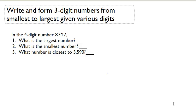Let's write and form three-digit numbers from smallest to largest, given various digits. So they give us a four-digit number: X, 3, Y, 7, where X and Y can stand for various digits.